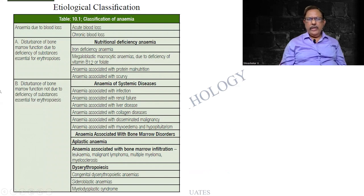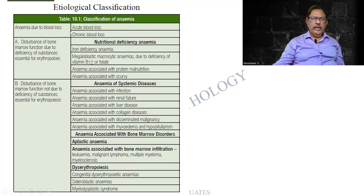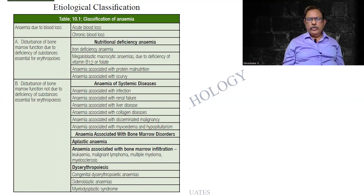The classification of anemia — whenever I say classification, open your book and see what is written there; mark it. There are two different types: nutritional or deficiency anemias, and hemolytic anemias. You will have to mention all the non-hemolytic anemias first — it can be blood loss, iron deficiency, aplasia, or some systemic disease causing anemia.